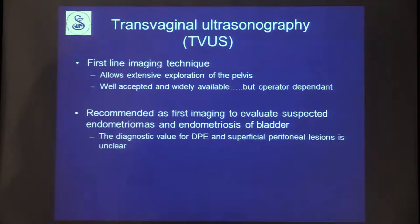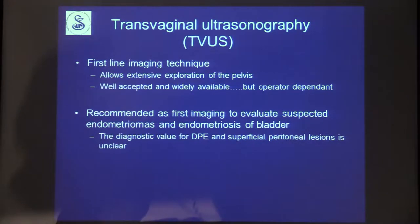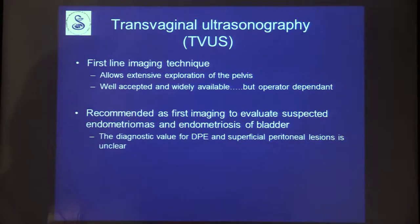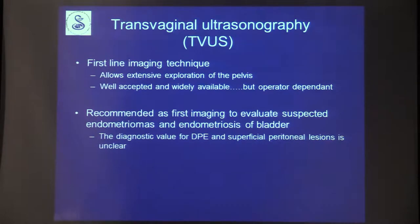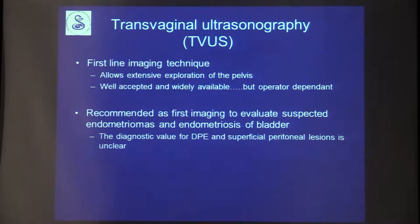Transvaginal ultrasound is always the first line of imaging. It allows extensive exploration of the pelvis, it's well accepted, though it is operator dependent. It allows dynamic imaging and visualization of adhesions, which is more difficult in the static setting of MRI. It is recommended as the first imaging for suspected endometriomas and bladder endometriosis, but its value is less clear for other areas of deep pelvic endometriosis and for superficial lesions.